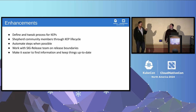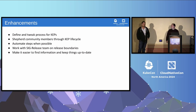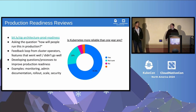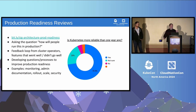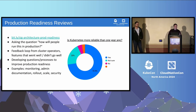SIG Architecture does not own approving the designs — we own what needs to go into them, but the SIGs actually decide whether a design is good enough. There are two processes SIG Architecture does own: API review and production readiness. We introduced production readiness reviews a few years back when we noticed difficulty actually supporting features going into production — questions like is this broken, how do I turn it off, how do I turn it back on, what are the consequences of it being off, is there a restart policy. Participation has been really good over the past couple years. It's an example of a project that worked really well.